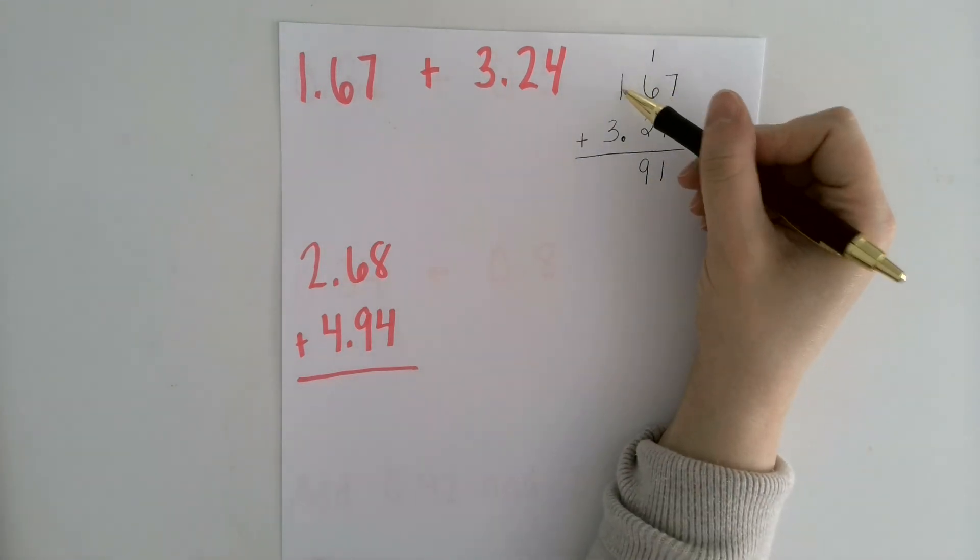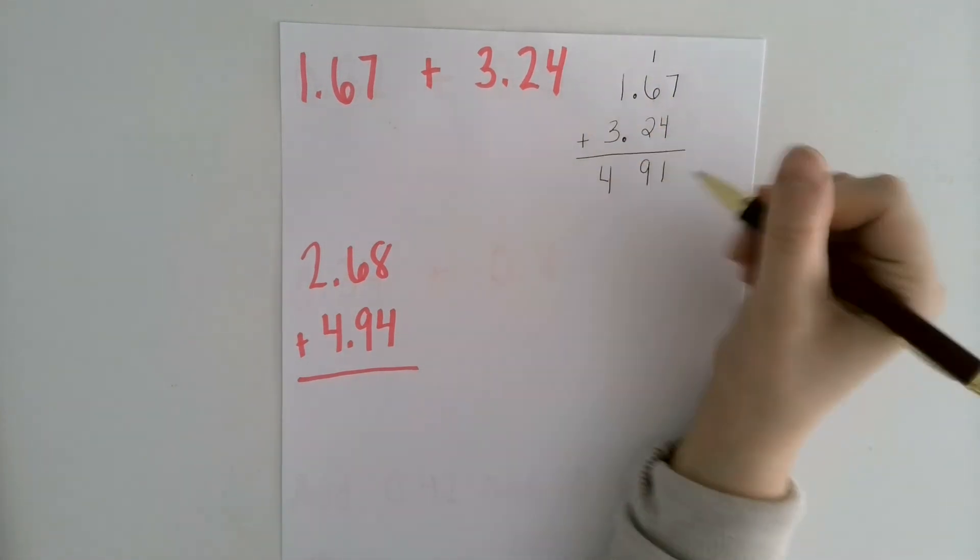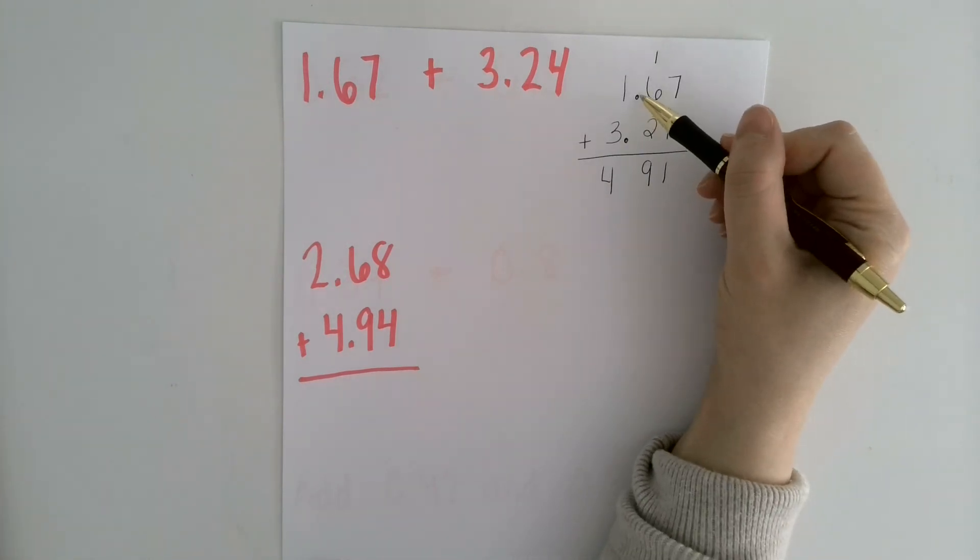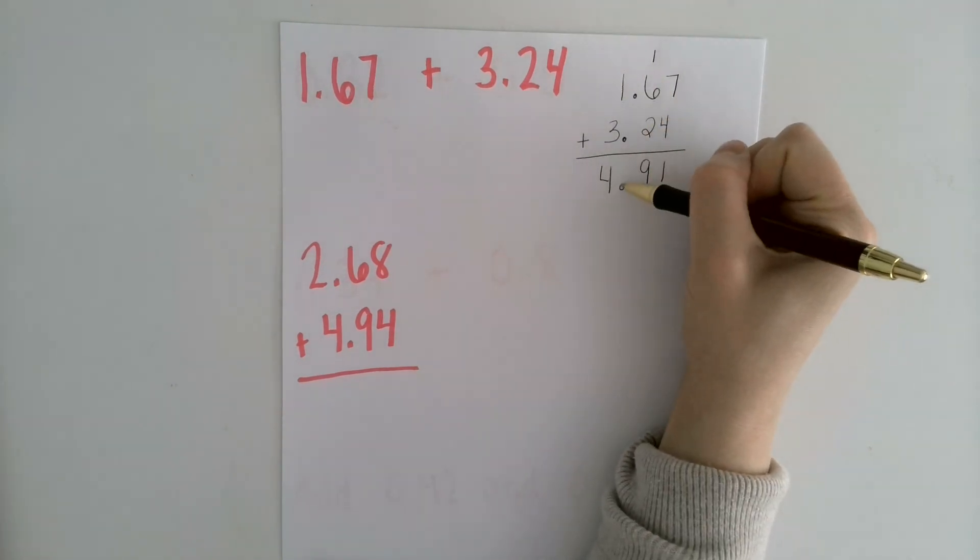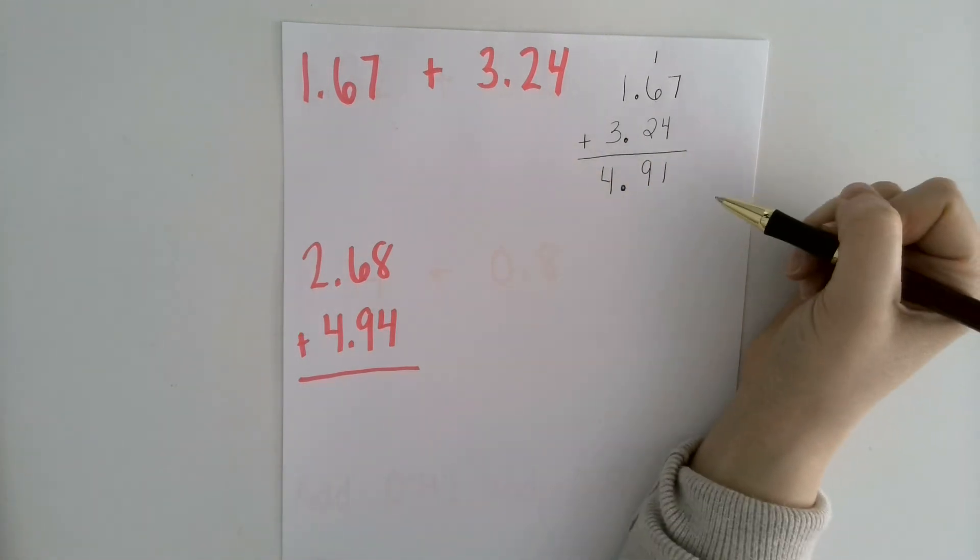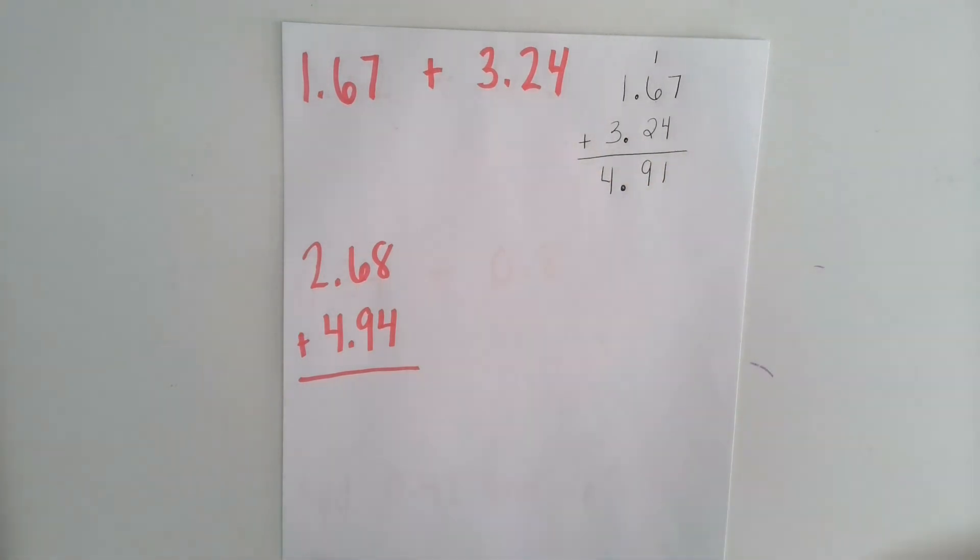And then here I have 1 plus 3 which is 4. I want to bring the decimal point straight down into my answer. So I'm going to bring it right down here between the 4 and 9. My answer is 4.91.